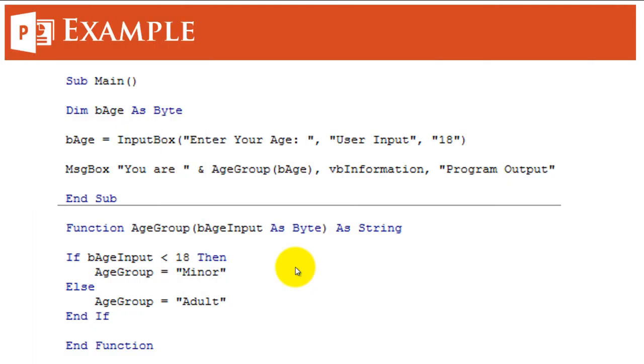So here is a simple example of how a subroutine and a function work together. The requirement of this project is that the user inputs his age and based on this age, we determine whether the user is a minor or an adult. Now we start the subroutine main declaring a variable saying dim bAge as byte and we are assigning a value to that variable using the input from the user. So we have used an input box here. Once the user inputs his age,